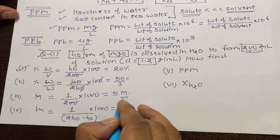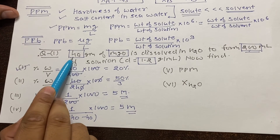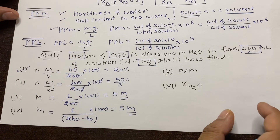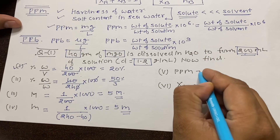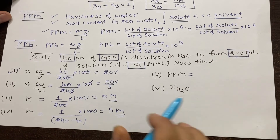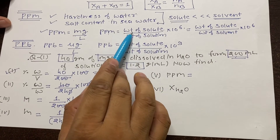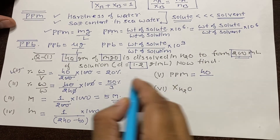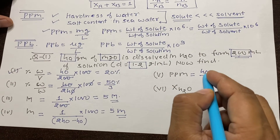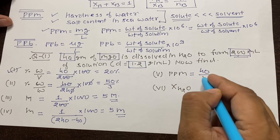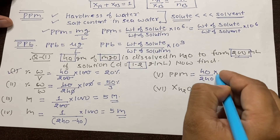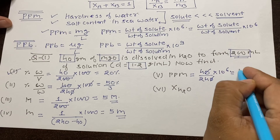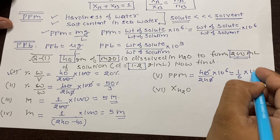For PPM: PPM = (weight of solute / weight of solution) × 10⁶. Weight of solute is 40 grams and weight of solution is 240 grams. So PPM = (40/240) × 10⁶ = approximately (1/6) × 10⁶.